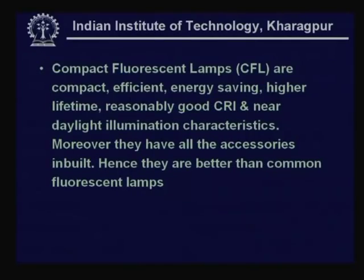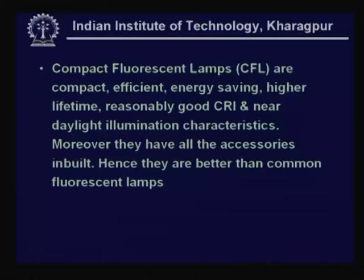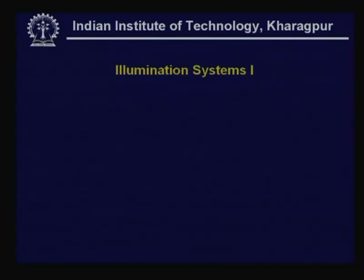Compact fluorescent lamps are compact, energy-saving, longer-lifetime fluorescent lamps that can be retrofitted into the same outlets as incandescent lamps. They need a higher starting voltage for the arc to strike, and since the arc is a constant current phenomenon, an impedance is required in series to maintain the current. This takes the form of an inductive coil called a choke. All these accessories are built within the same envelope.